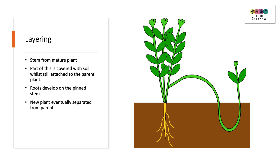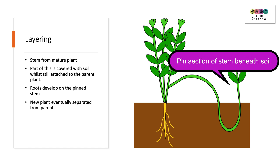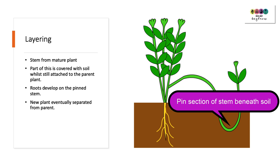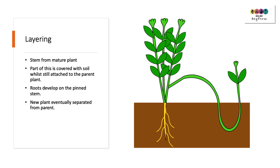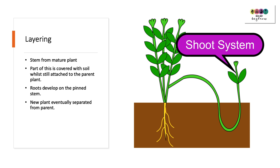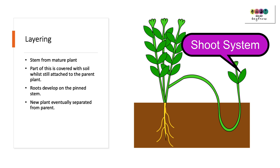The next method is layering. This involves taking the stem from the mature plant — the stem, which is still attached to the parent plant, is pinned beneath the soil, and it's this part of the stem that will develop the roots. Part of the stem is left above the soil, and this will develop into a mature shoot system. Eventually, the new plant can be separated from the parent plant.